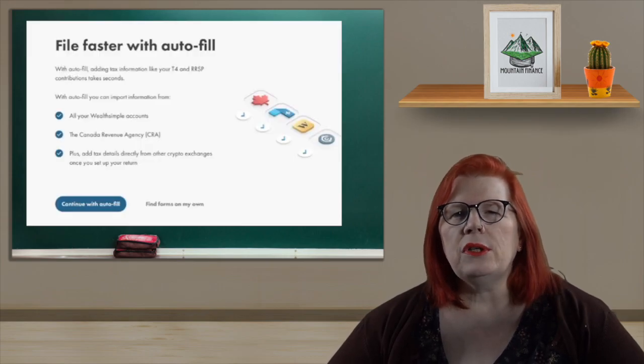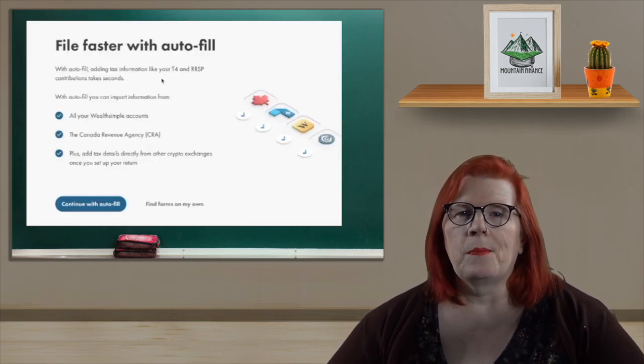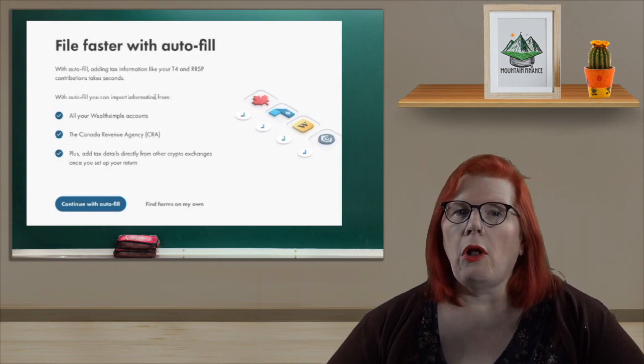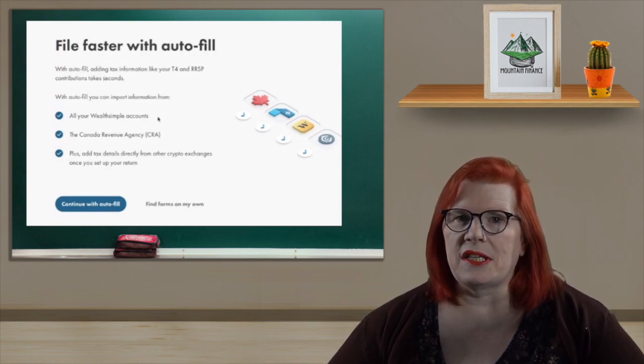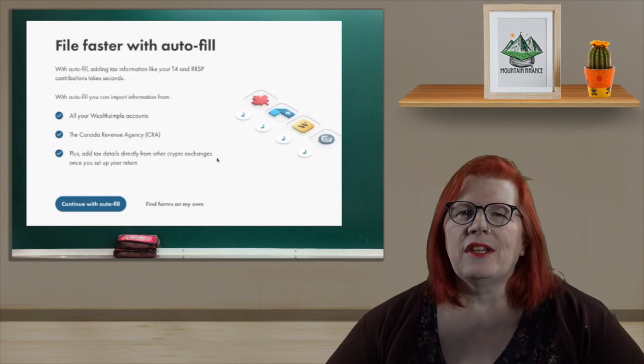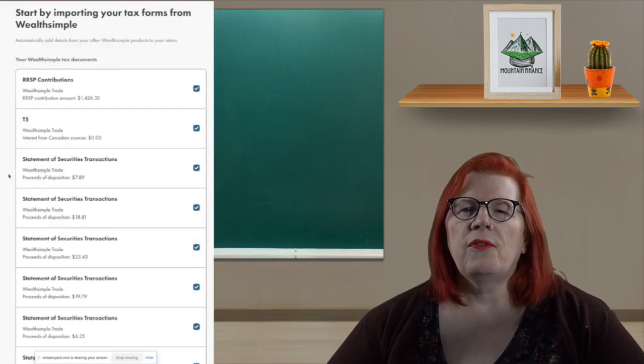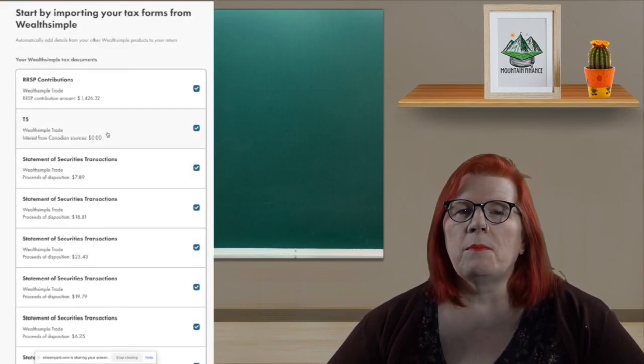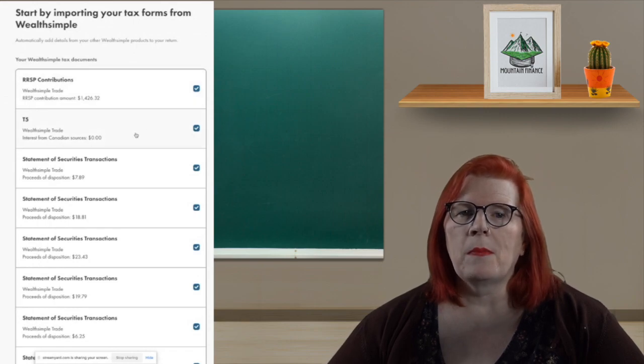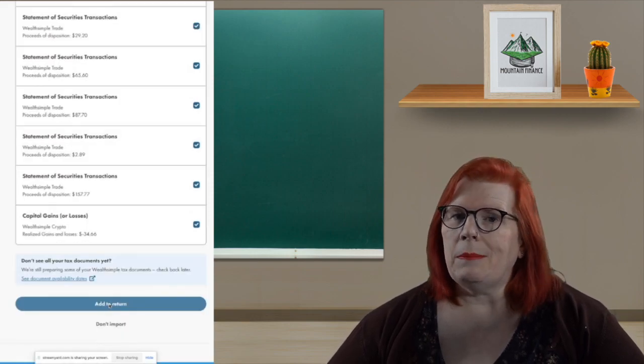We absolutely want to be using Autofill, as this is the way we can import all of our tax forms from the CRA and the investment information from the various exchanges. That's mostly going to be your crypto. First thing I'm going to do is import all the stock transactional information from Wealthsimple. This will include my RRSP and TFSA information and then also any taxable activity I did in my personal account.